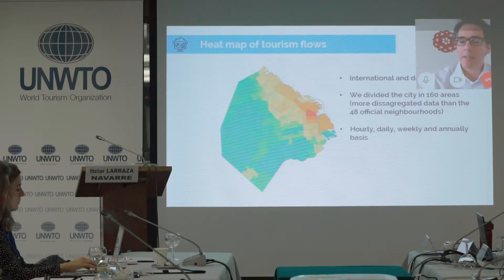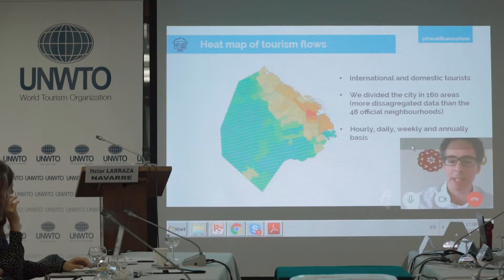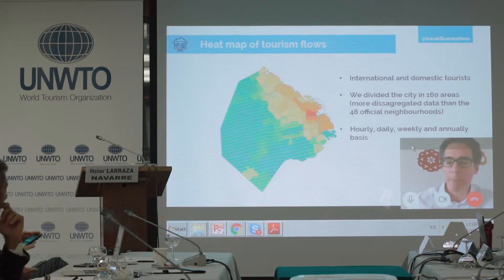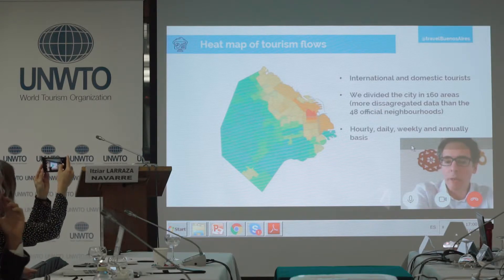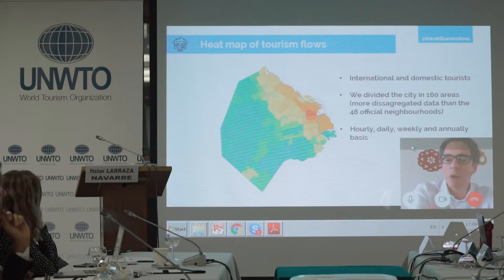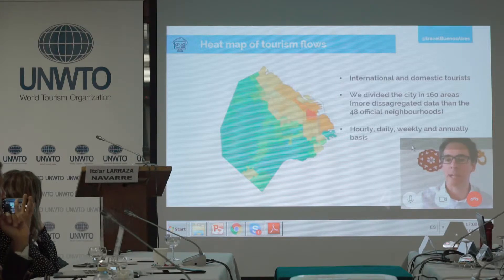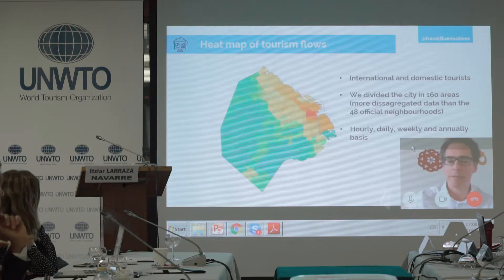We made an agreement with a local mobile phone company here in Buenos Aires, Argentina, so we created this map which is about all the material flows within the city. In Buenos Aires we have 48 official neighborhoods, but at the information level, we have it more disaggregated — we have it in 160 areas, so we can look in detail at certain avenues and some specific cultural quarters. This is very useful for us.